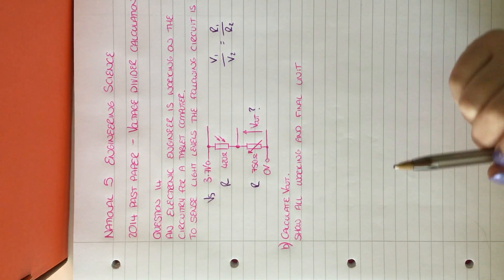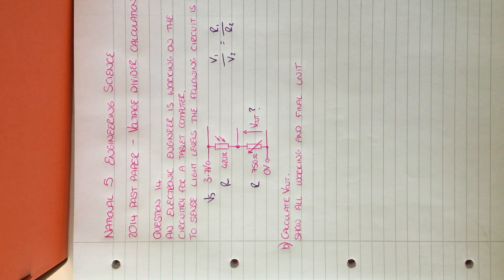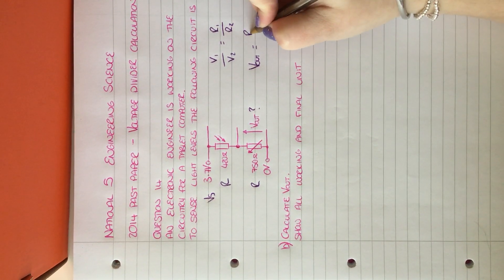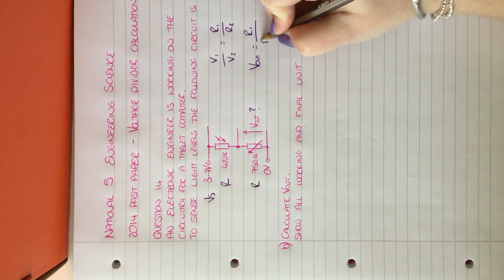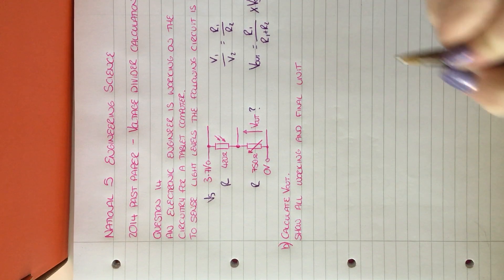The equation that we can use is the Bayer equation, but this is not in the data booklet, so you will need to remember it. What we can say is V out equals resistance one divided by resistance one plus resistance two multiplied by the voltage supply.